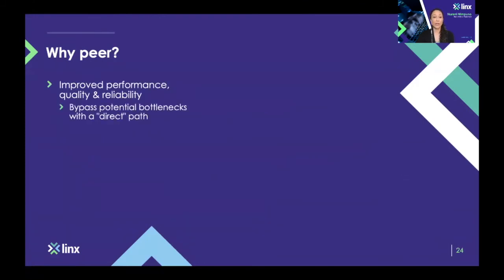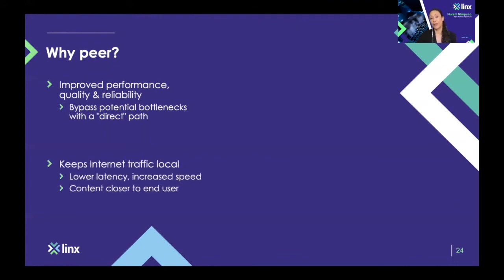There are a few other reasons as well. Improved performance, quality, and reliability come from controlling how your traffic is routed — by having that control you can avoid potential bottlenecks and find a more direct, optimised path. Keeping internet traffic local is important particularly if you've got content you want to send to end customers in the most optimised way, so you might not want to risk having that content leave the region or country. By peering at an exchange point directly with access providers who have those customers, you can optimise the delivery of that content.